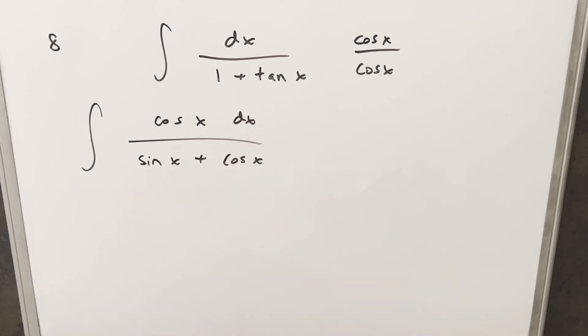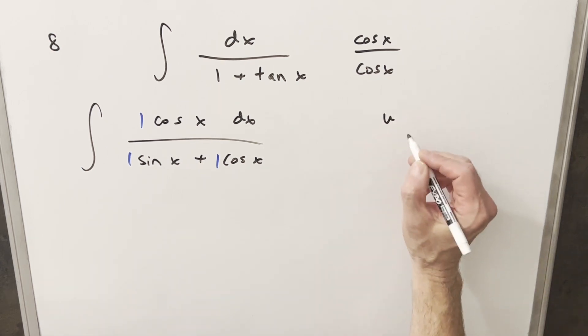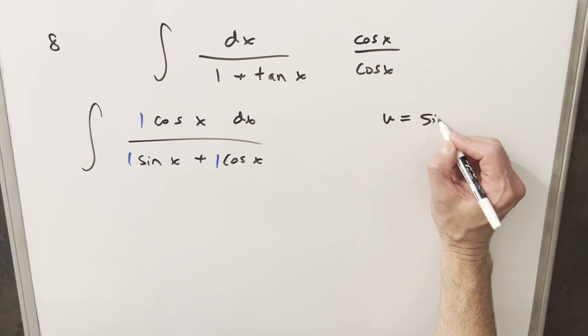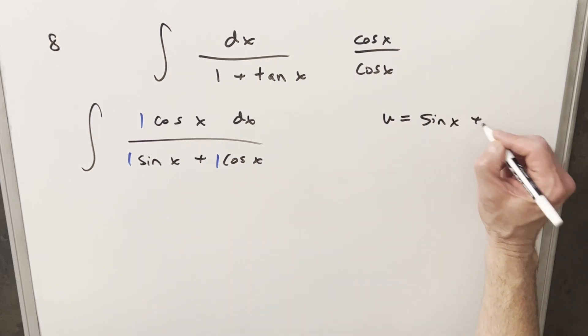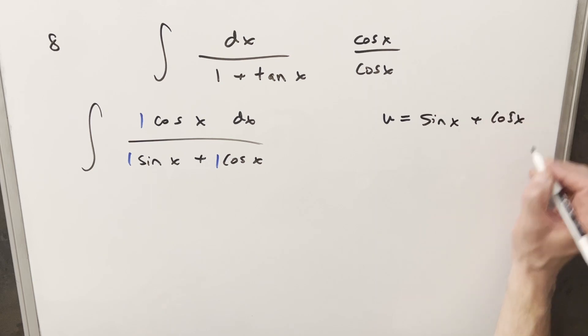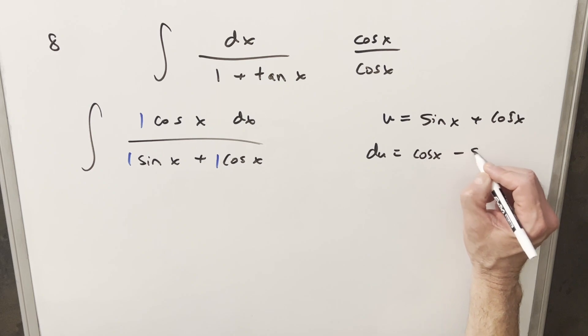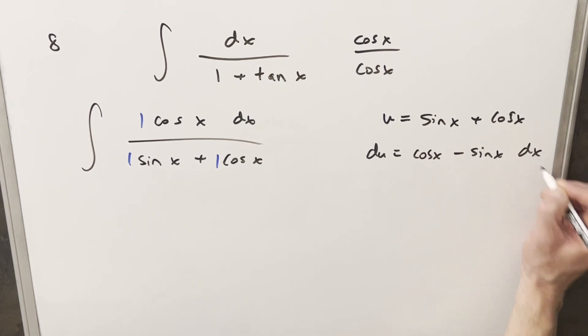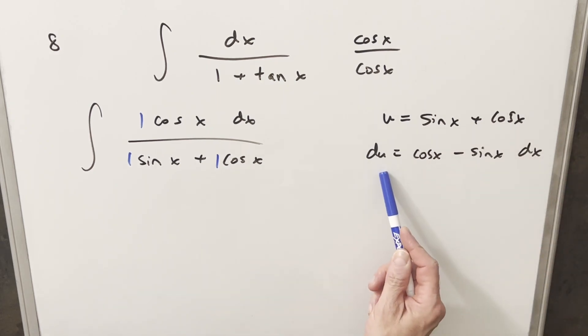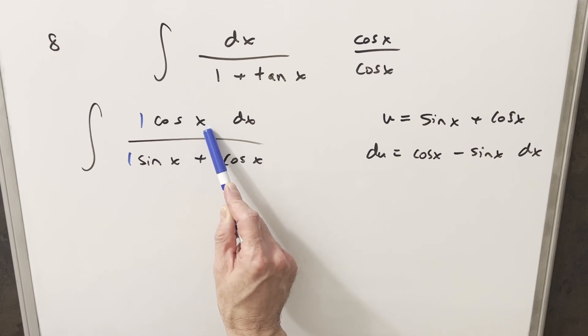At this point I have a method that I really like to use when we have just sines and cosines and all of our coefficients are 1. I can actually do this when all of our coefficients are the same. So what I'm going to do is just go ahead and set up a u substitution even though I don't know if it's going to work yet. I'm going to make my u the whole denominator, sine x plus cosine x. I'll take a derivative. du is going to be cosine x minus sine x dx.